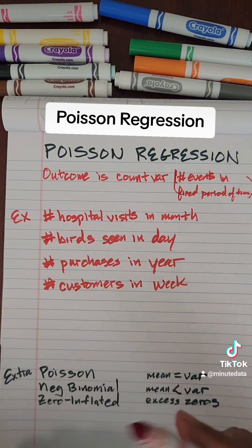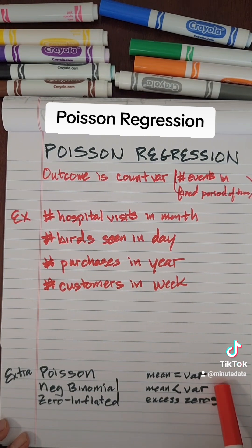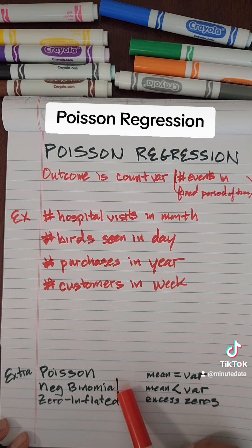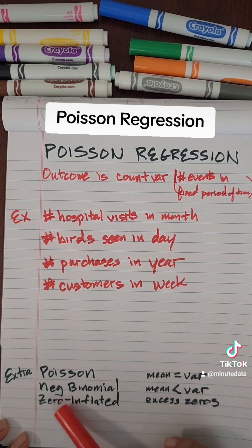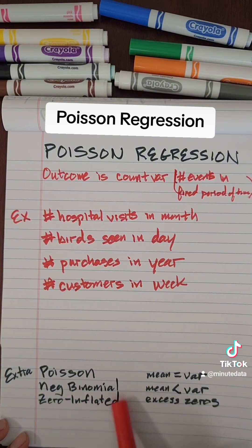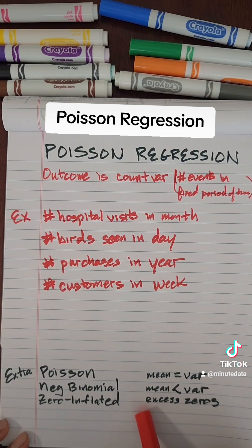In terms of additional material, the Poisson regression assumes that the mean is equal to the variance, which is a Poisson distribution. However, many times the variance is much larger than the mean, in which case you might want to use a negative binomial regression. And then lastly, we also have zero-inflated regression, in which case there's an excess of zeros in your data distribution.